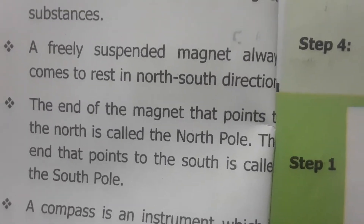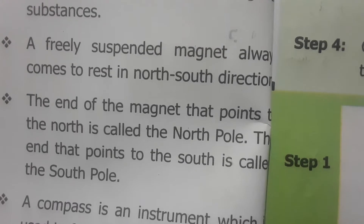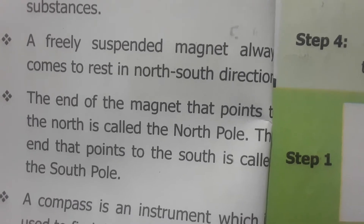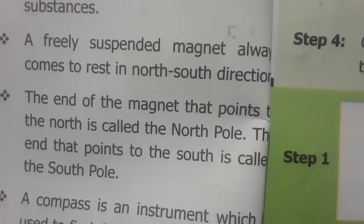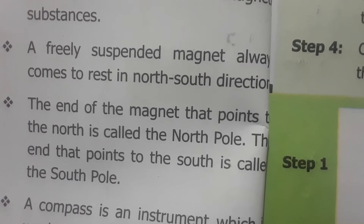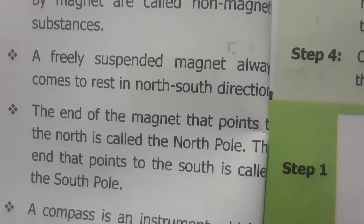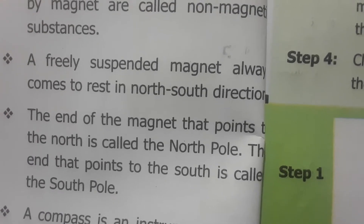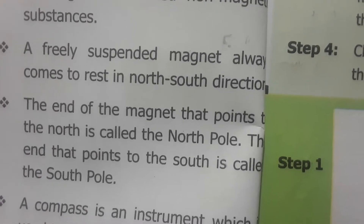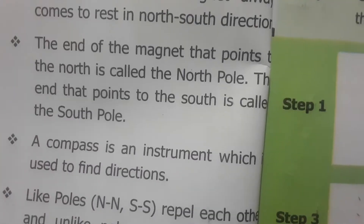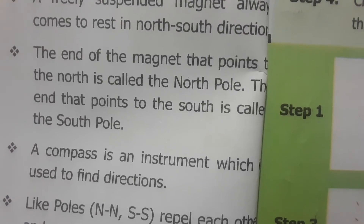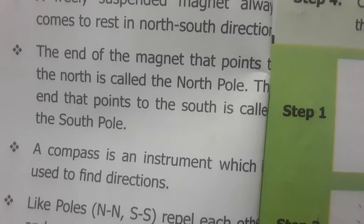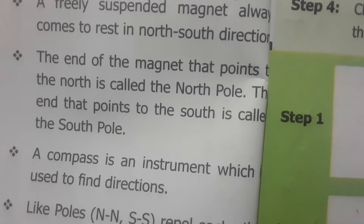Most exams ask this point as a question: a freely suspended magnet always comes to rest in which direction? Options like north, south, east, or southeast may appear, but the answer is north and south direction. The end of the magnet that points north is called the north pole, and the end that points south is called the south pole.